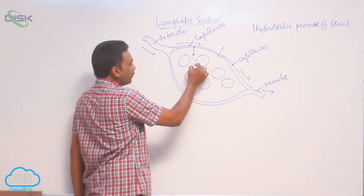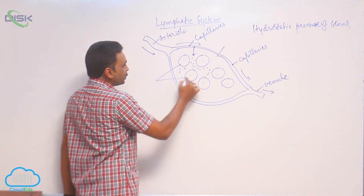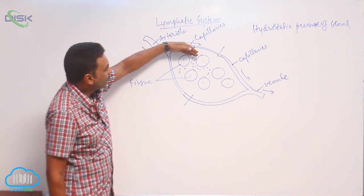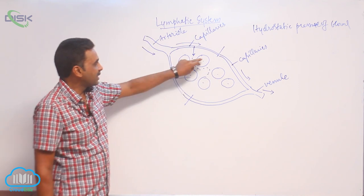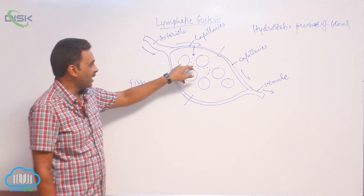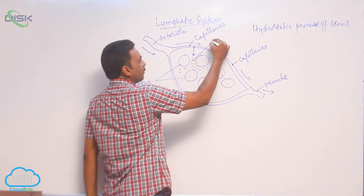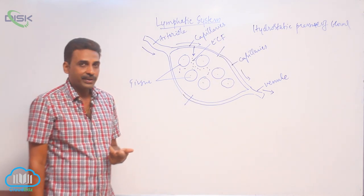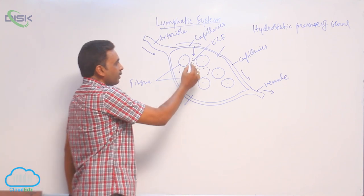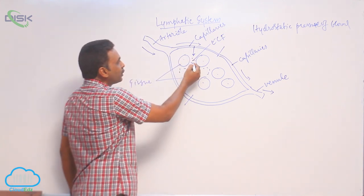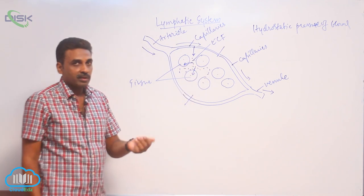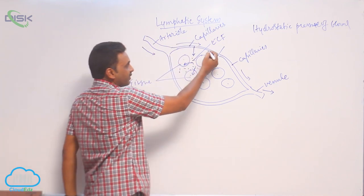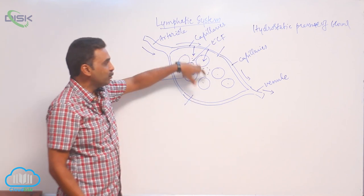Some proteins which have less molecular weight are also filtered out. Some fluids come outside into the tissue space. The filtered fluid comes to lie in the space present between the tissues and this fluid is called extracellular fluid, also called interstitial fluid. From this fluid, nutrients are taken up by the cells and oxygen diffuses into the tissues.